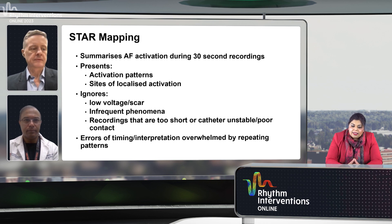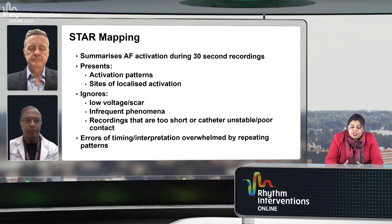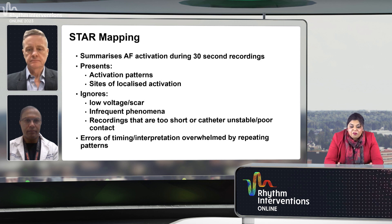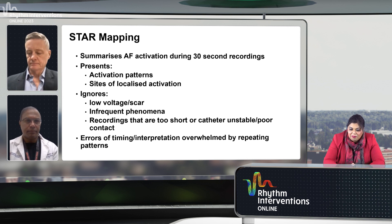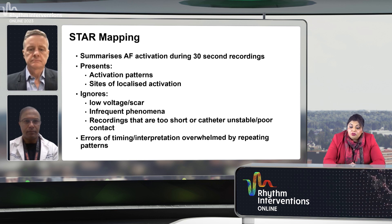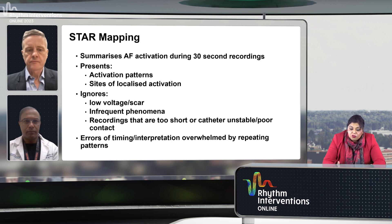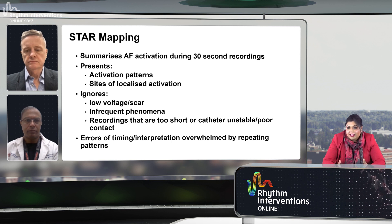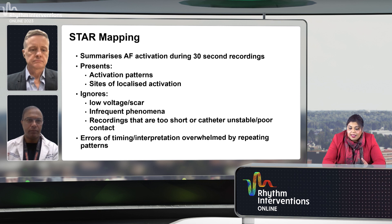Star Mapping is a technology that summarizes AF activation during 30-second recordings. It can show you activation patterns and sites of localized activation. It ignores low voltage and scar, infrequent phenomena, and recordings that are too short or where the catheter is unstable or has poor contact. Errors of timing interpretation are overwhelmed by repeating patterns.